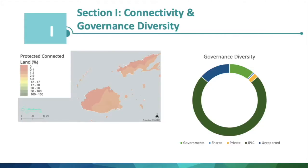For connectivity, the dossiers present the degree of habitat fragmentation, the number of biodiversity corridors, and the connectivity index for the country, primarily from the UN Biodiversity Lab and DOPA data. When examining governance diversity, we conduct an analysis of the percentage of different governance types. In Fiji, more than 72% are under indigenous peoples and local communities governance, 11% are governed by the government, 2.1% are under private governance by for-profit organizations, 0.7% are under shared governance, and 13.7% do not have their governance type yet reported.